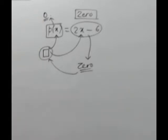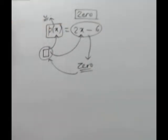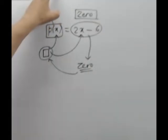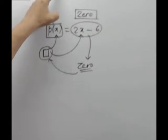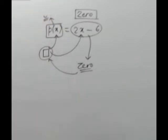तो question में क्या है? हमें zero ही निकालना है, यानि हमें x का वो value निकालना है कि इसमें अगर हम रखते हैं, तो पूरा का value 0 हो जाए। तो इसलिए हम लोग 2x² = 0 से शुरू करेंगे।